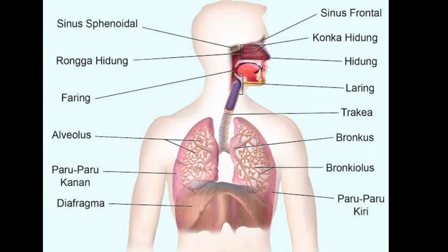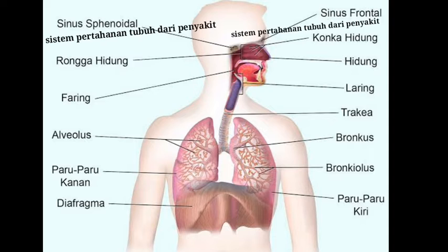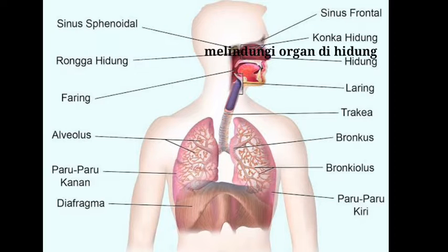Ini adalah gambar sistem pernafasan pada manusia. Yang pertama akan kita bahas adalah sinus etmoidal dan sinus frontal yang berfungsi sebagai sistem pertahanan tubuh dari penyakit. Selanjutnya yaitu konkah hidung, berfungsi melindungi organ di hidung.